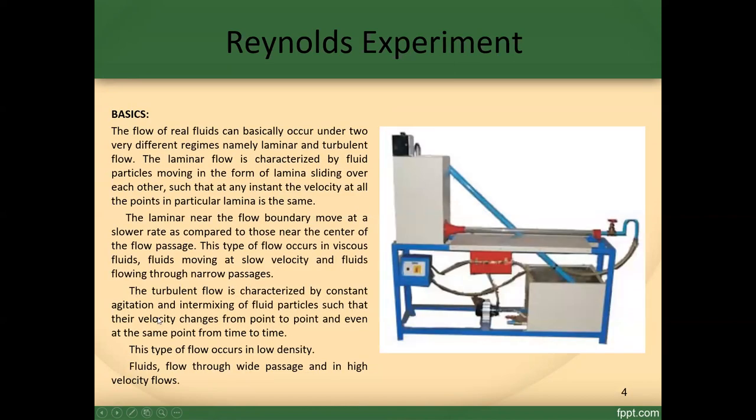The flow of real fluid can basically occur under two very different regimes: laminar and turbulent flow. Laminar flow is characterized by fluid particles moving in the form of laminae sliding over each other, such that at any instant the velocity at all points in a particular lamina is the same. The laminae near the flow boundary move at a slower rate compared to those near the center of the flow passage.